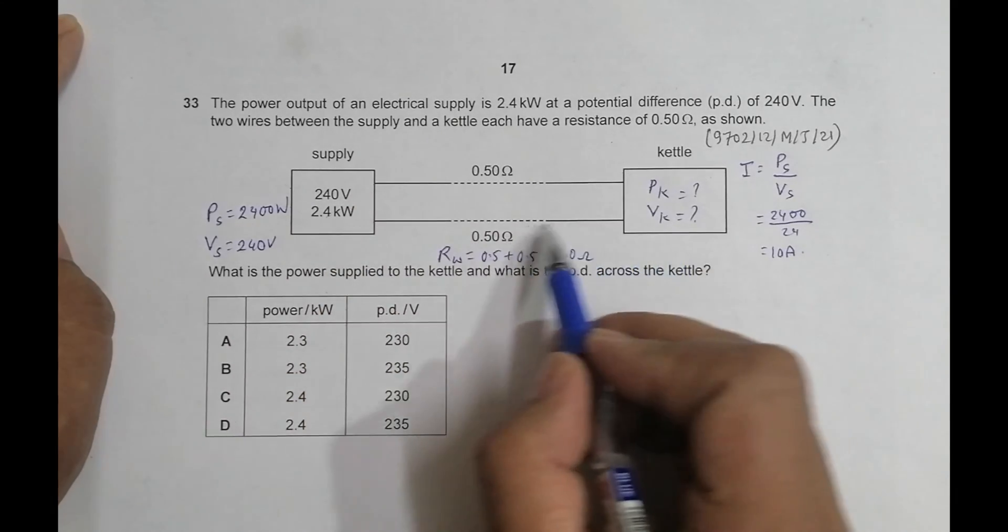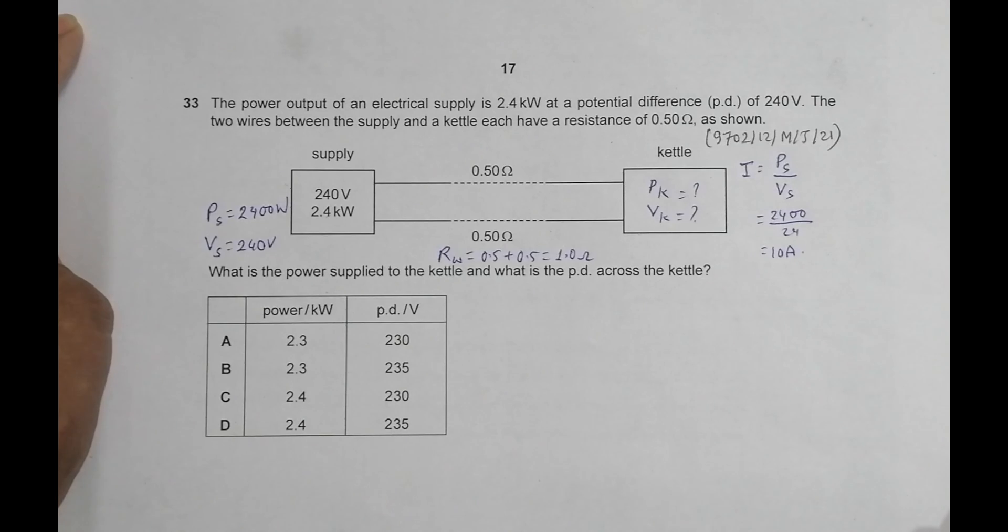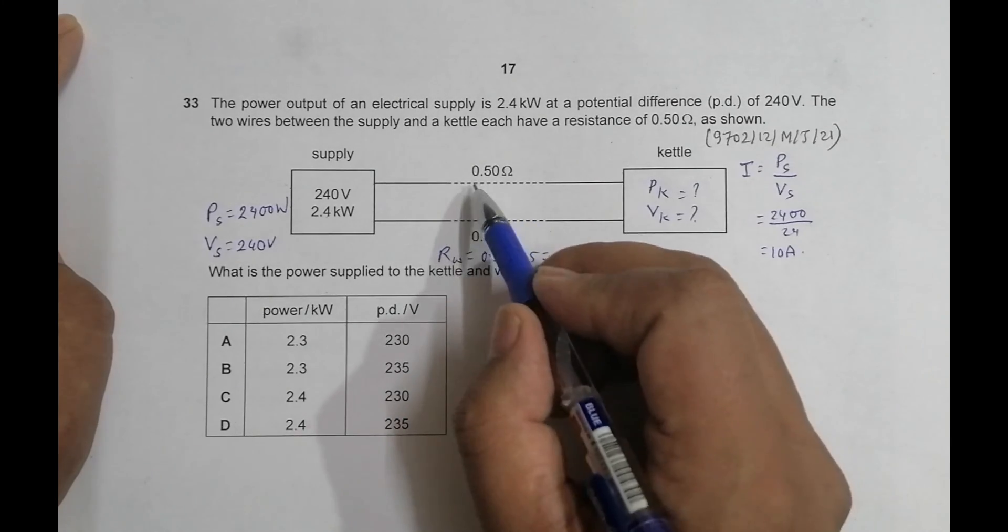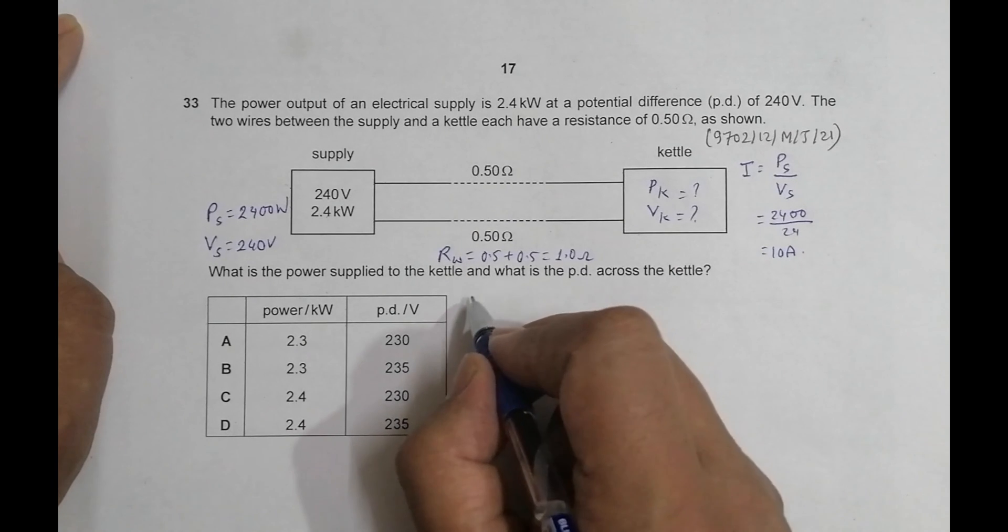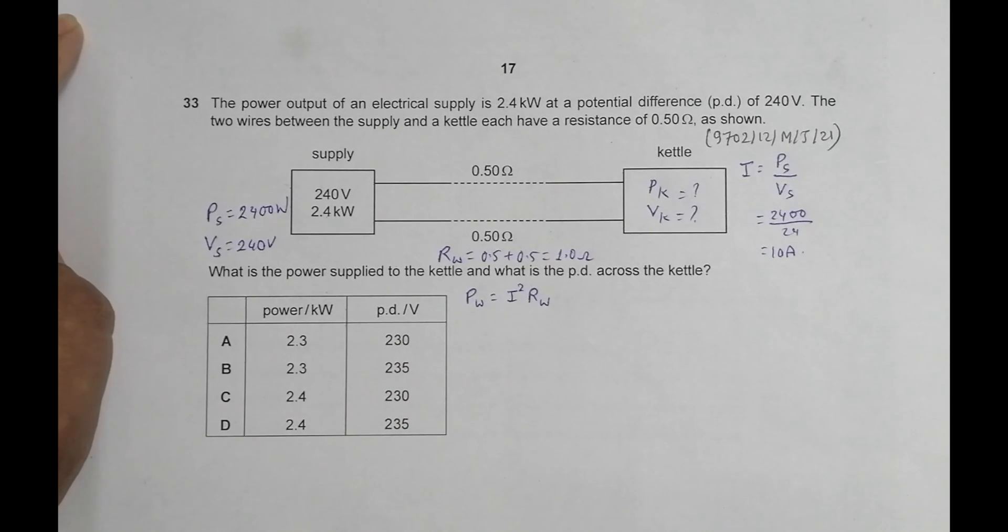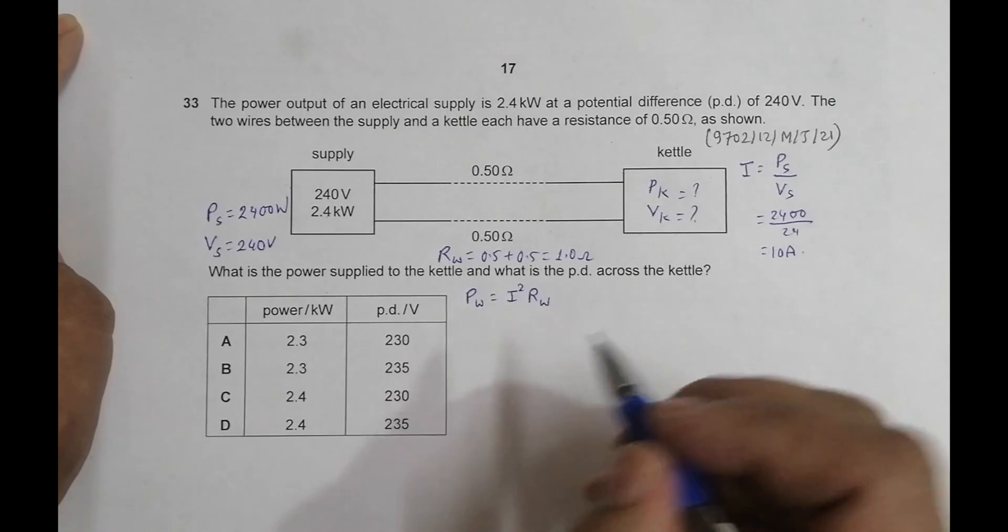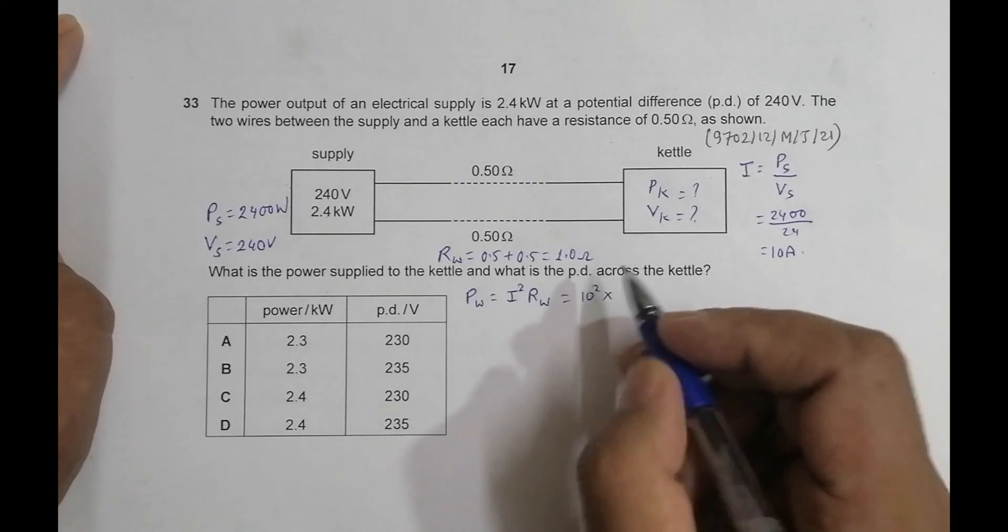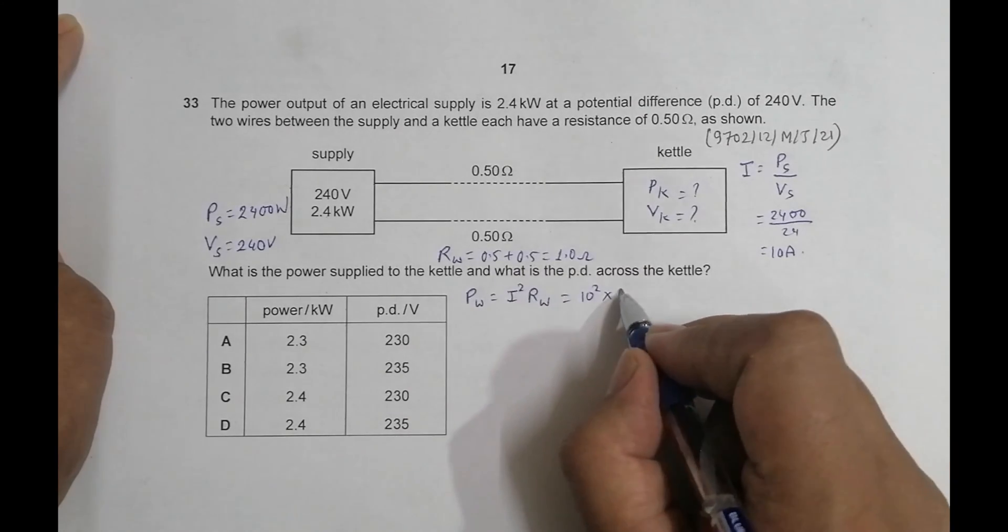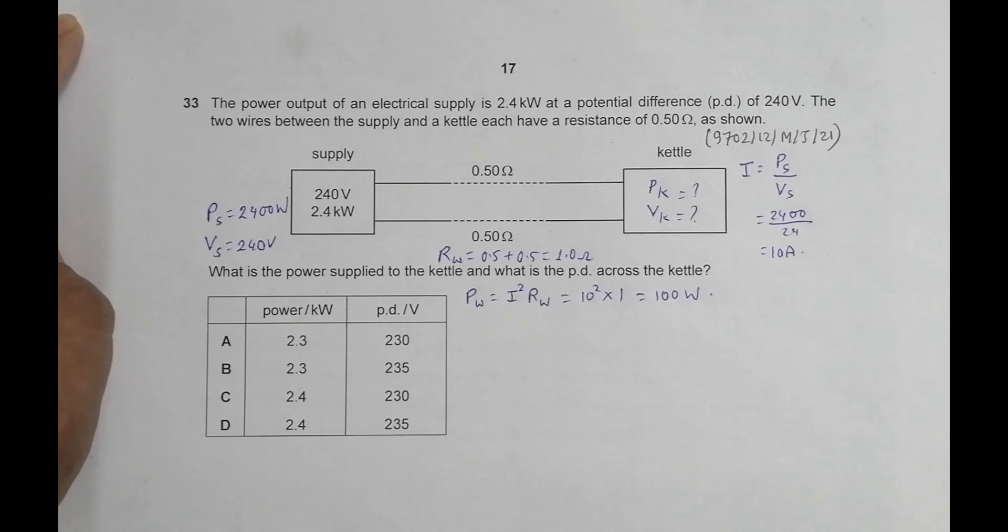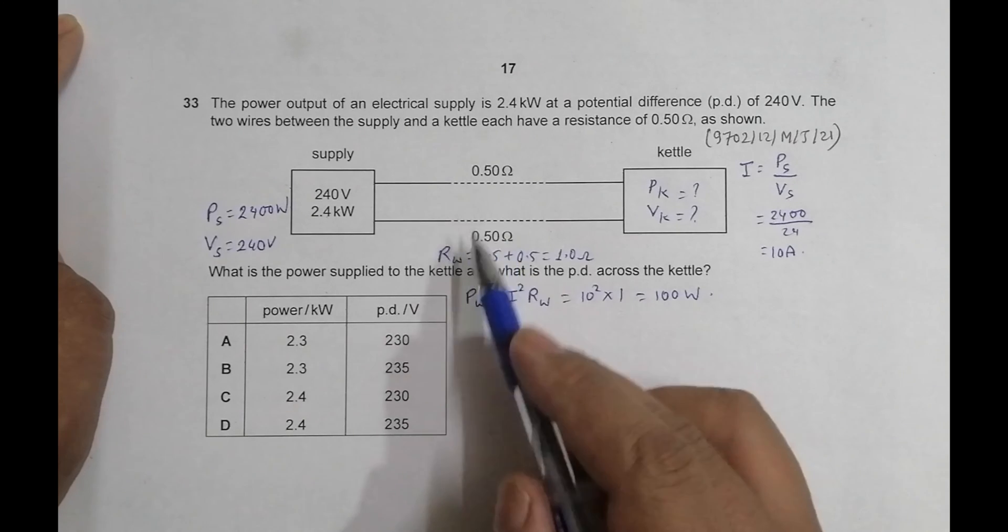Now with this 10 amperes, let us find the power loss across these wires. The power loss across these wires is equal to current squared times resistance of the wires, because the formula for power is I squared R. This is 10 squared into 1, equal to 100 watts. So power loss across the wires is 100 watts.